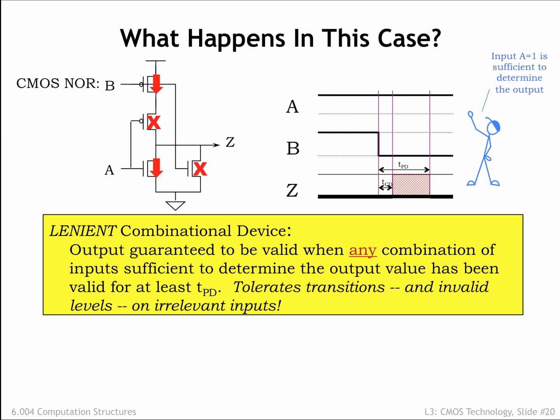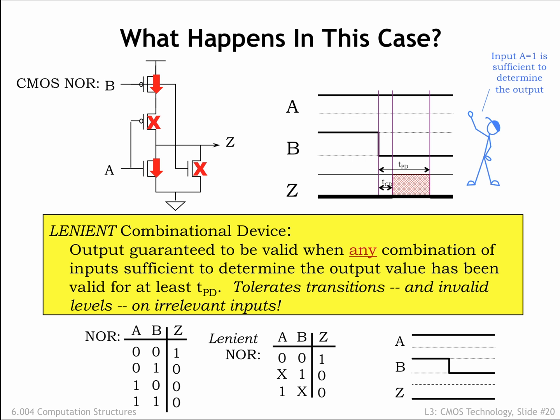Happily, most CMOS implementations of logic gates are naturally lenient. We can extend our truth table notation to indicate lenient behavior by using X for the input values on certain rows to indicate that input value is irrelevant when determining the correct output value. The truth table for a lenient NOR gate calls out two such situations. When A is 1, the value of B is irrelevant, and when B is 1, the value of A is irrelevant. Transitions on the irrelevant inputs don't trigger the TCD and TPD output timing normally associated with an input transition.